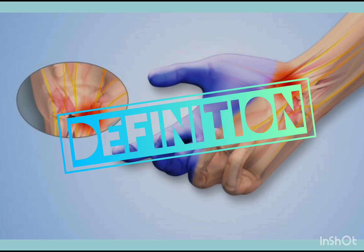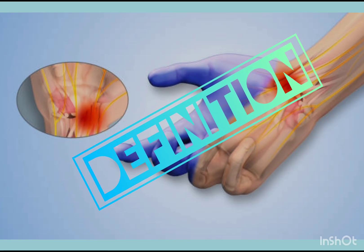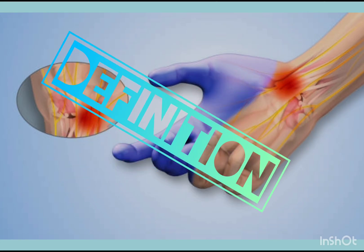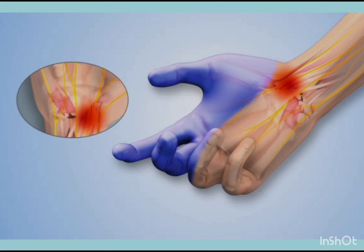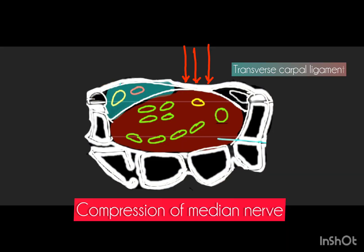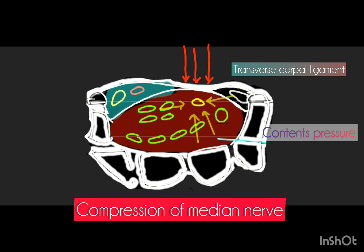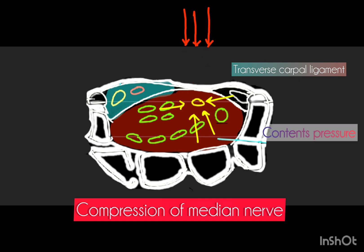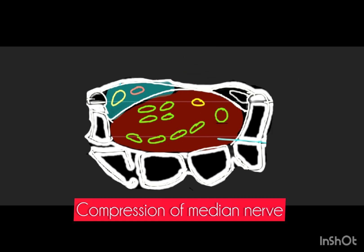Hello, today let's discuss carpal tunnel syndrome. Carpal is derived from the Greek word 'carpus,' which means wrist. The definition is: compression of the median nerve under the transverse carpal ligament at the level of the wrist.